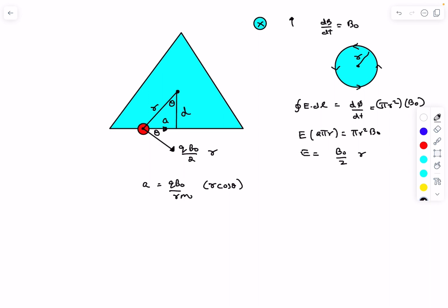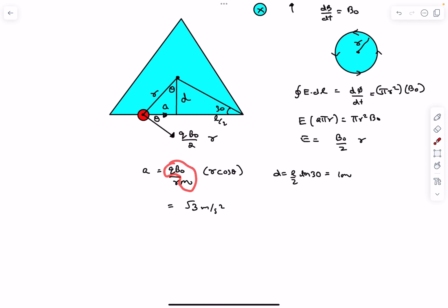And small d is essentially pretty easy to compute. So this distance is ℓ/2. We know this angle is 30. So small d is nothing but ℓ/2 tan 30, and ℓ is 2√3. So this comes out to be 1 meter.